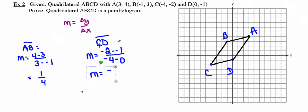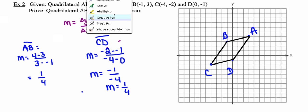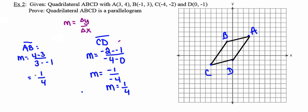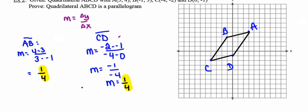For CD, I end up with negative 1 divided by negative 4, and a negative divided by a negative is a positive, so that slope is also 1/4. These two came out to be exactly the same, which is exactly what I would expect — I'm trying to show this as a parallelogram, so it had better have two pairs of parallel sides with matching slopes, or I know I made a mistake somewhere.